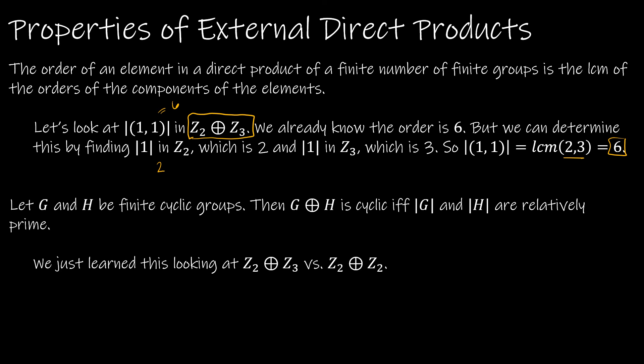Another property says: let G and H be finite cyclic groups. Then the external direct product of G and H is cyclic if and only if the orders of G and H are relatively prime. We saw this with Z2 cross Z3 — 2 and 3 are relatively prime, and that did create a cyclic group — whereas Z2 cross Z2 did not, since 2 and 2 are not relatively prime.